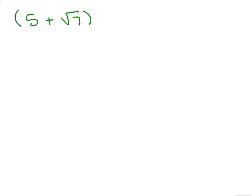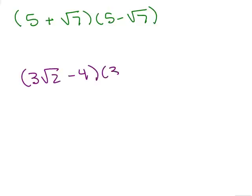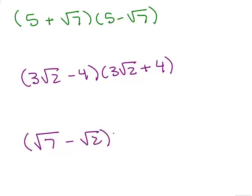Before going on to what will work, let's write down some practice problems: 5 plus square root of 7 times 5 minus square root of 7; then 3 square roots of 2 minus 4 times 3 square roots of 2 plus 4; and square root of 7 minus square root of 2 times square root of 7 plus square root of 2. Go ahead and multiply these out — you've done these before when multiplying binomials, just with some square roots.